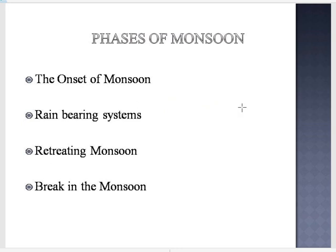The next topic covers the phases of monsoon. We will discuss four phases: the onset of the monsoon, the rain-bearing system, the retreating monsoon, and the break in the monsoon.